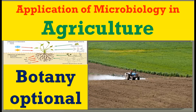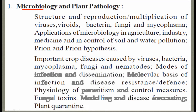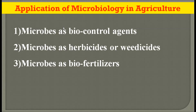Hello everyone, welcome to the Botany Option channel for the UPC examination. In today's lecture we are going to see the application of microbiology in the field of agriculture. In our syllabus, paper one, first unit is microbiology and plant pathology. The applications of microbiology in agriculture can be broadly studied under three headings: microbes as biocontrol agents, microbes as herbicides or weedicides, and microbes as biofertilizers.